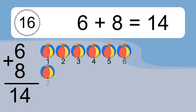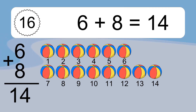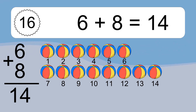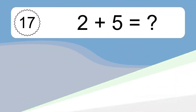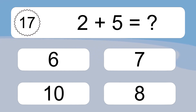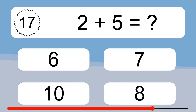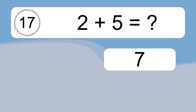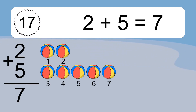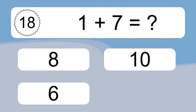6 plus 8 equals what? Six plus eight equals fourteen. Let's count it: one, two, three, four, five, six, seven, eight, nine, ten, eleven, twelve, thirteen, fourteen.